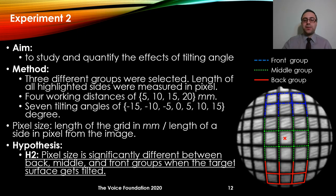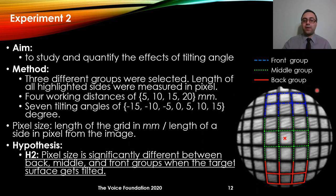In the second experiment we wanted to study and quantify the effect of tilting angle. There are now three groups: blocks in the center, blocks corresponding to the front of the setup, and blocks corresponding to the back. Working distances were 5, 10, 15, and 20 millimeters, and we used seven different tilting angles. The hypothesis was that pixel size is significantly different between back, middle, and front groups when the target surface is tilted.